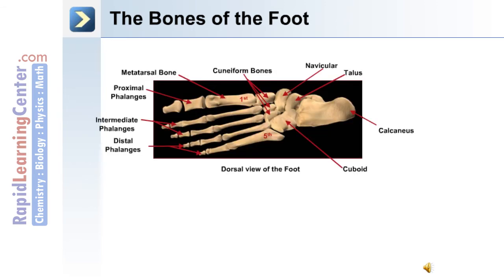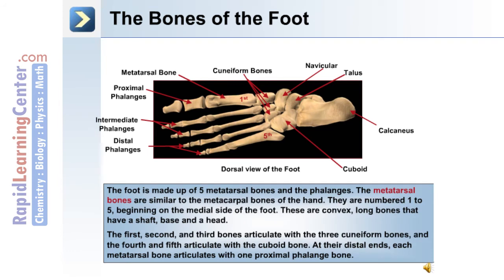The bones of the foot: as shown in this dorsal view, adjacent to the cuneiform bones and the cuboid bone are the five metatarsal bones, numbered one through five. There are also proximal, intermediate, and distal phalanges. The metatarsals are similar to the metacarpal bones of the hand, numbered one to five beginning on the medial side. They are convex long bones with a shaft, base, and head. The first, second, and third bones articulate with the three cuneiform bones; the fourth and fifth metatarsal bones articulate with the cuboid bone. At their distal end, each metatarsal bone articulates with one proximal phalange bone.